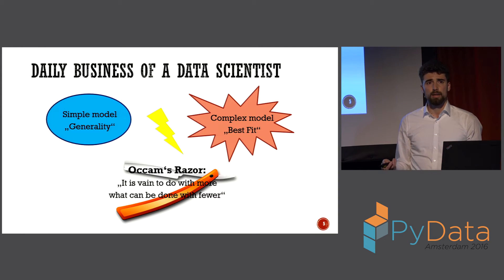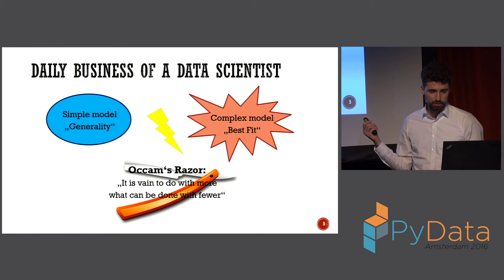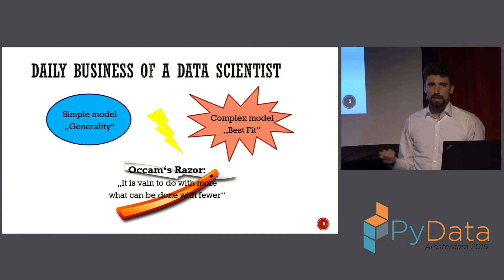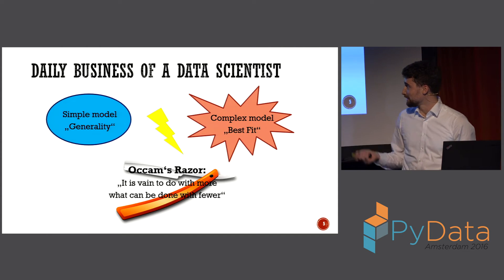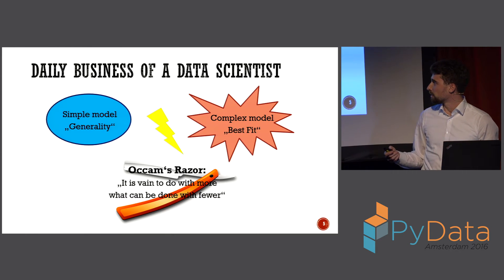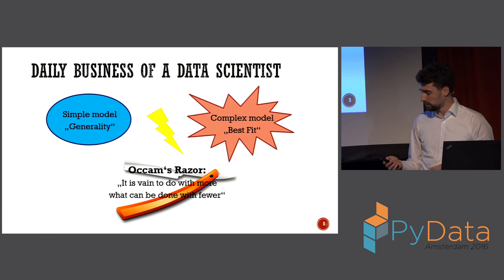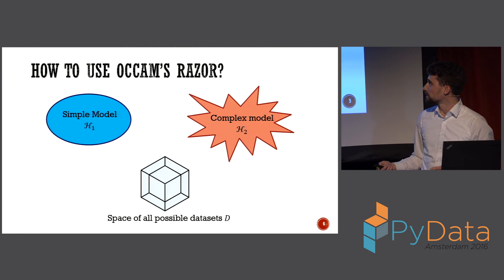By the way, how many people have heard of Occam's razor? That's a lot of people. It was also mentioned in the movie Contact. Has anyone seen this movie? It's a great movie — the main discussion is where they say that with one model, like assuming God, you can explain everything. From a philosophical point of view it's also great. But here we want to get a little bit more mathematical.